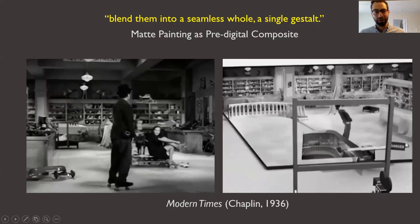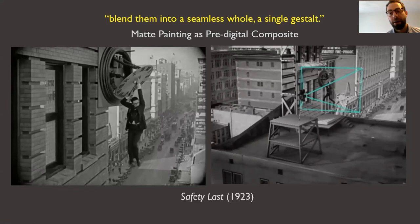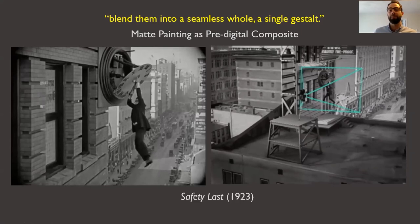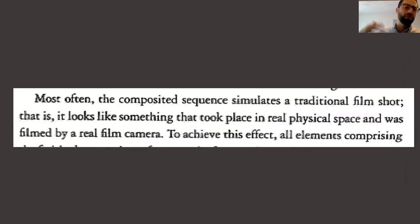The same idea appears even earlier — Safety Last, 1923 — using camera trickery to create the illusion that two things are in a spatial relation they do not in fact occupy. As Manovich will say, most often the composite sequence simulates a traditional film shot — it looks like something that took place in real physical space was filmed by a real film camera. There's a realism attached to compositing: a single gestalt, no seams.